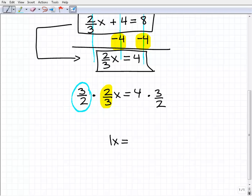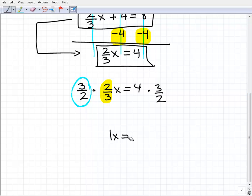You always have to be fair when you're solving equations. So two-thirds times, excuse me, three-halves times two-thirds x is going to be what? Hopefully, remember how to multiply fractions. That's going to be 1x, or simply x.